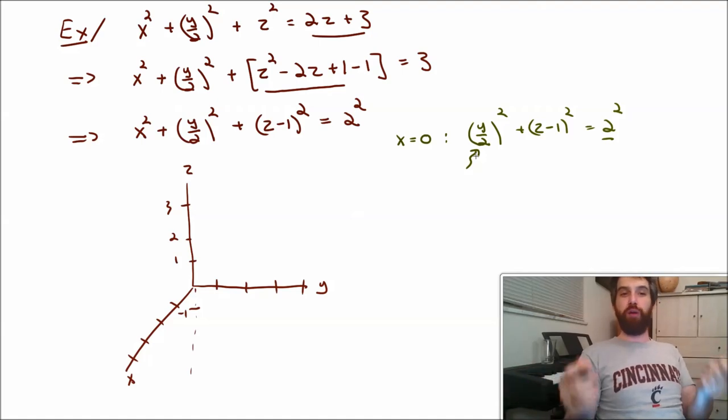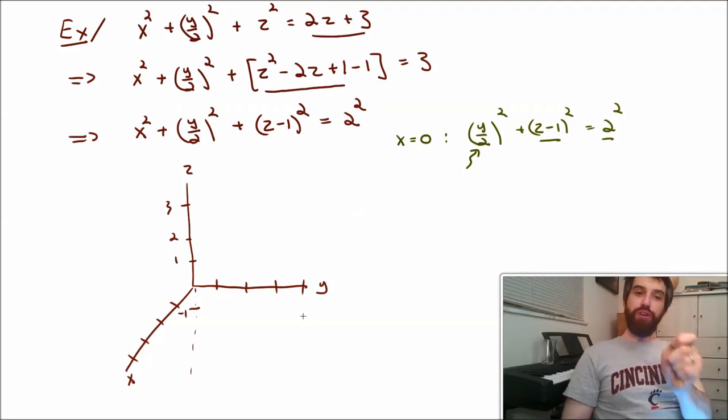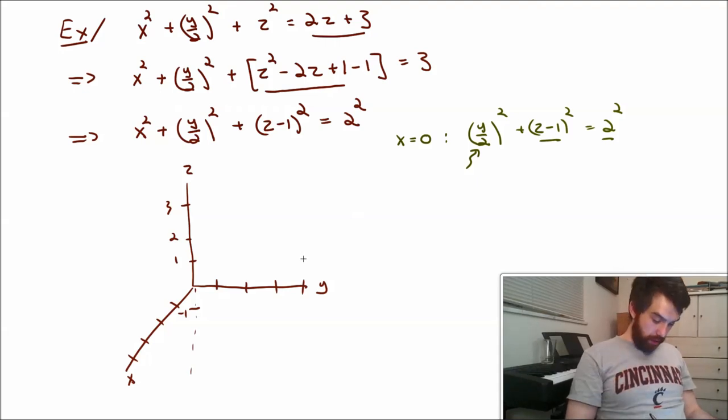And then the z minus 1 portion, it means that the center of my oval is going to be at the value of z equal to 1. So what am I going to get here? I'm going to get an oval that goes out 1, 2, 3, 4, and has a center point of y equal to 0 and z equal to 1. And it is going to look like this.